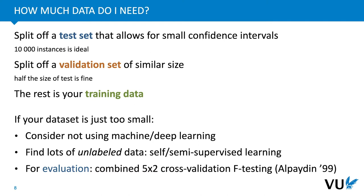That's a lot of data, and in many cases you don't have it — especially when you're looking for labeled data, which is often difficult to get. So what should you do if your dataset is just too small? Well, the first thing is to consider not using machine learning or deep learning at all. Quite often there are simply other approaches which would also work, and on such small datasets would work much better.